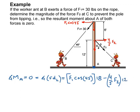Well, we know the value of F1 is 30, so we can make that substitution here. And now we can go ahead and solve for the value of F2. And we get 39.8 pounds.